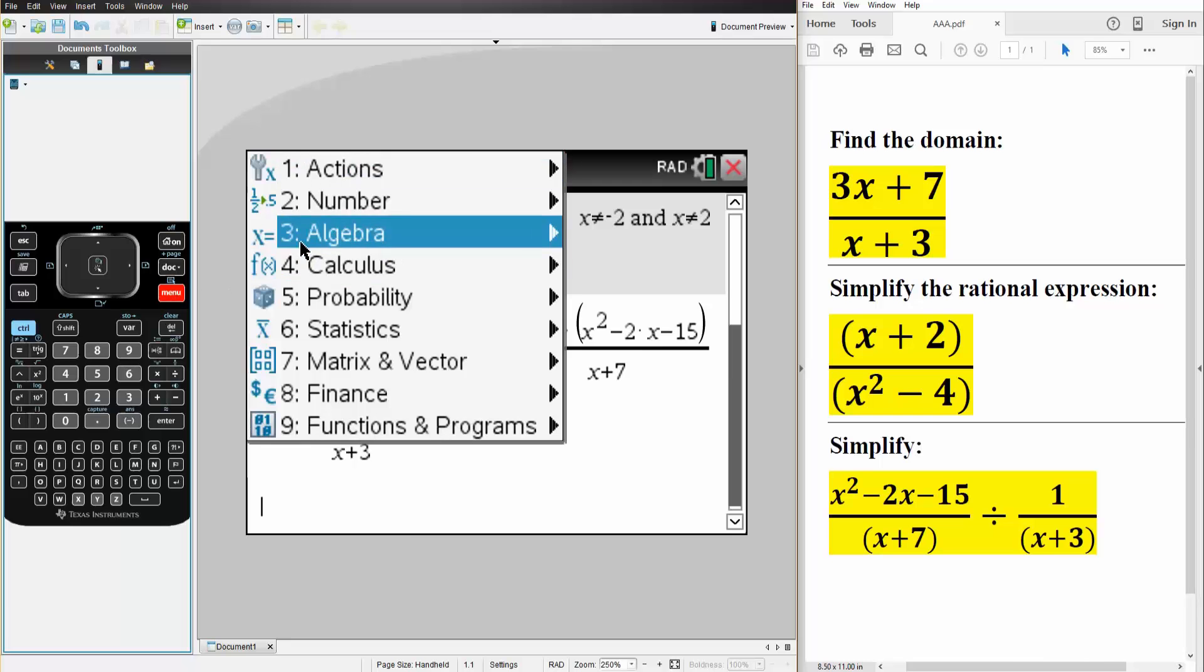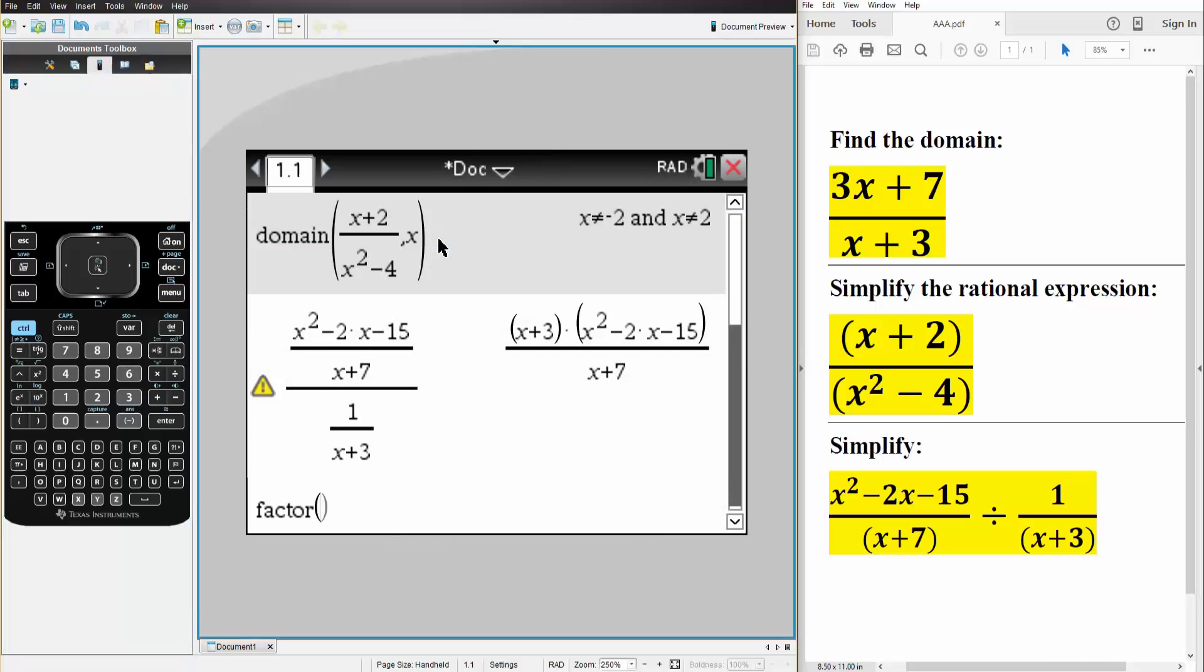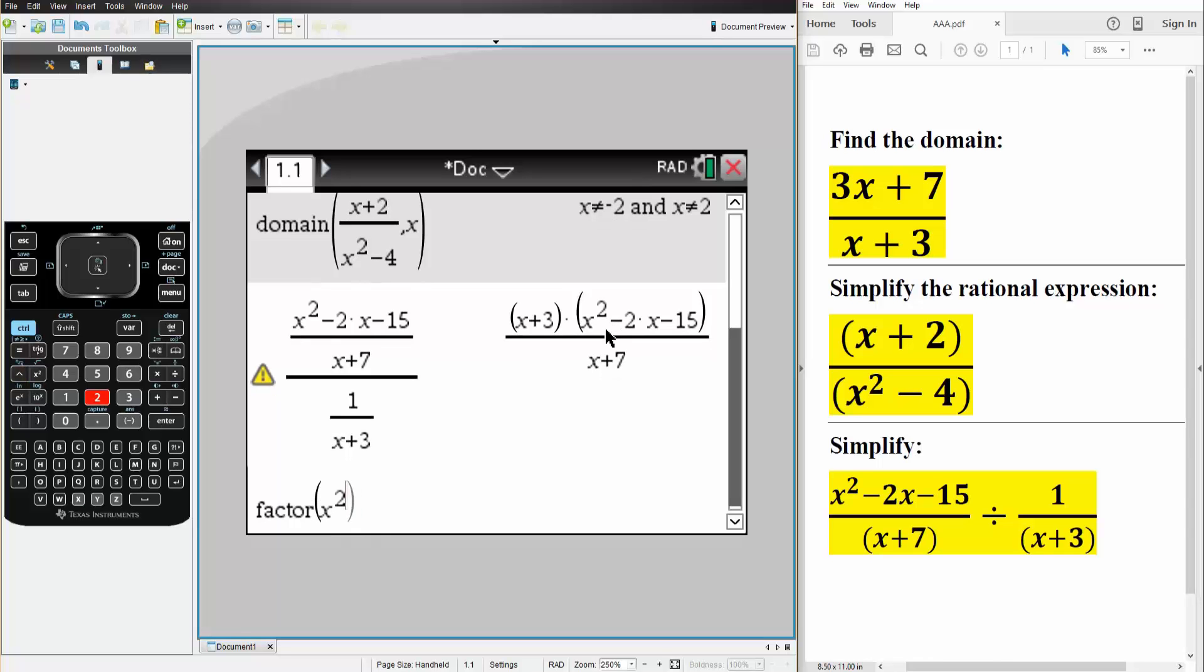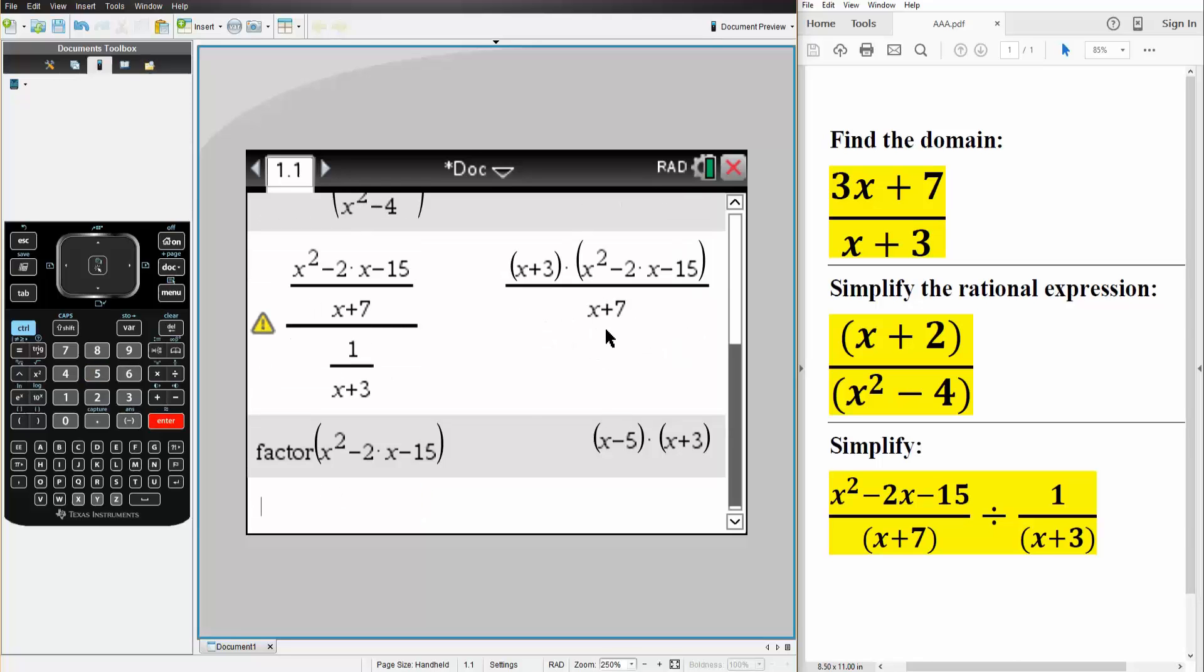So if we hit menu, algebra, factor, we want to factor out x squared minus 2x minus 15, and we would get x minus 5 times x plus 3.